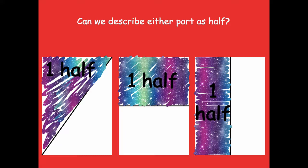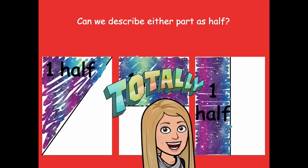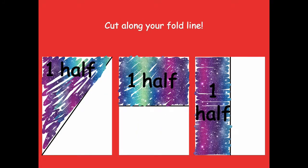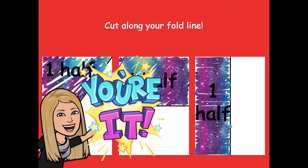Can we describe either part as half? Totally, right? The shaded part can be one half, or the unshaded part can be one half. Now I want you to cut along your fold line — wherever you have that line drawn to split your paper in half, cut on that line — then click play when you're ready for the next step.